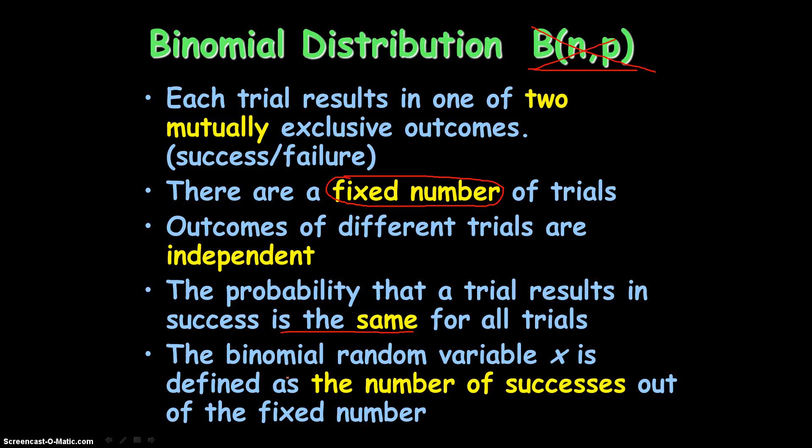The binomial random variable x is defined as the number of successes out of the fixed number. This is a big set of words, but what this all boils down to is the fact that you're going to be given a problem with a certain number of trials, and you're going to be asked of a situation that gives a certain number of successes. And that probability, that random variable, is the probability of the number of successes. So let's move on.